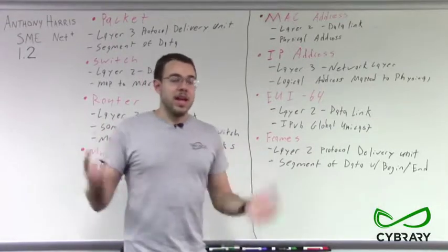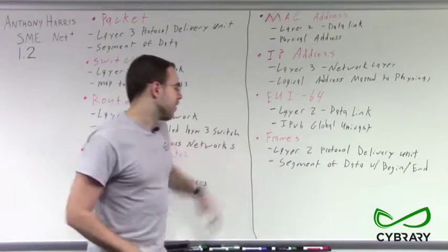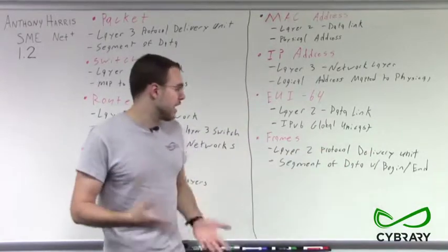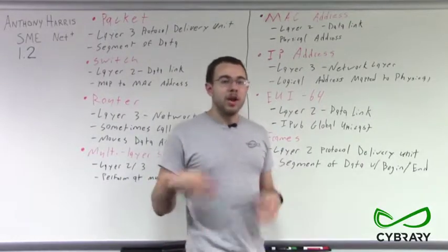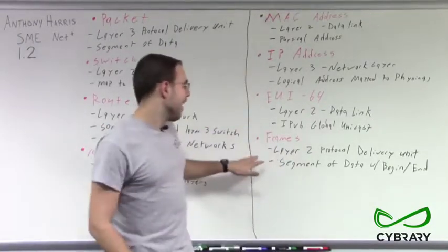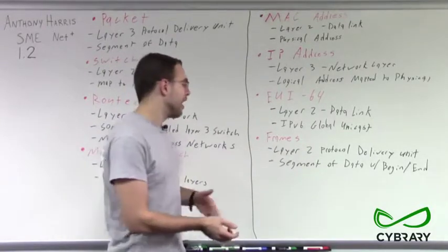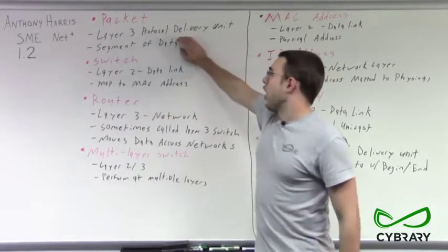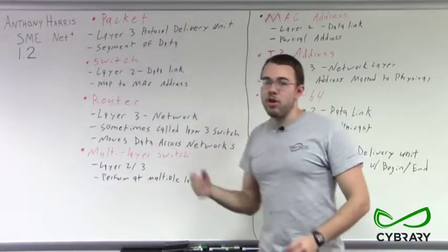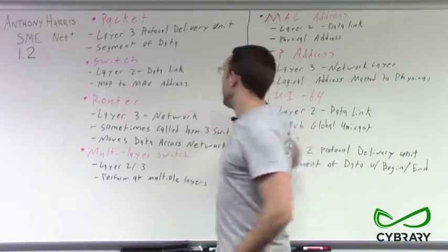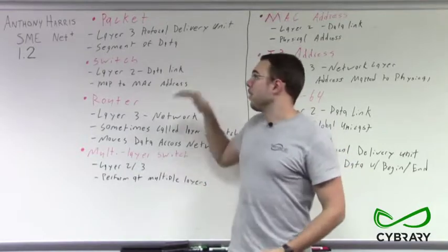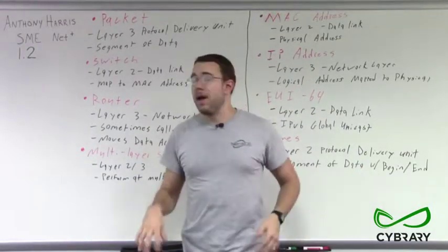Next we have frames. Frames are our layer 2, our data link layer protocol delivery units. They are segments of data with a beginning and an end that we use at the layer 2 level. When we're talking about segments of data in terms of layer 2, we refer to them as frames. Next are packets. Packets are very similar to frames, but they are our layer 3 protocol delivery units. When we're talking about transferring data at the layer 3 networking level, we're talking about packets — segments of data with a beginning and an end sent across our layer 3 network.